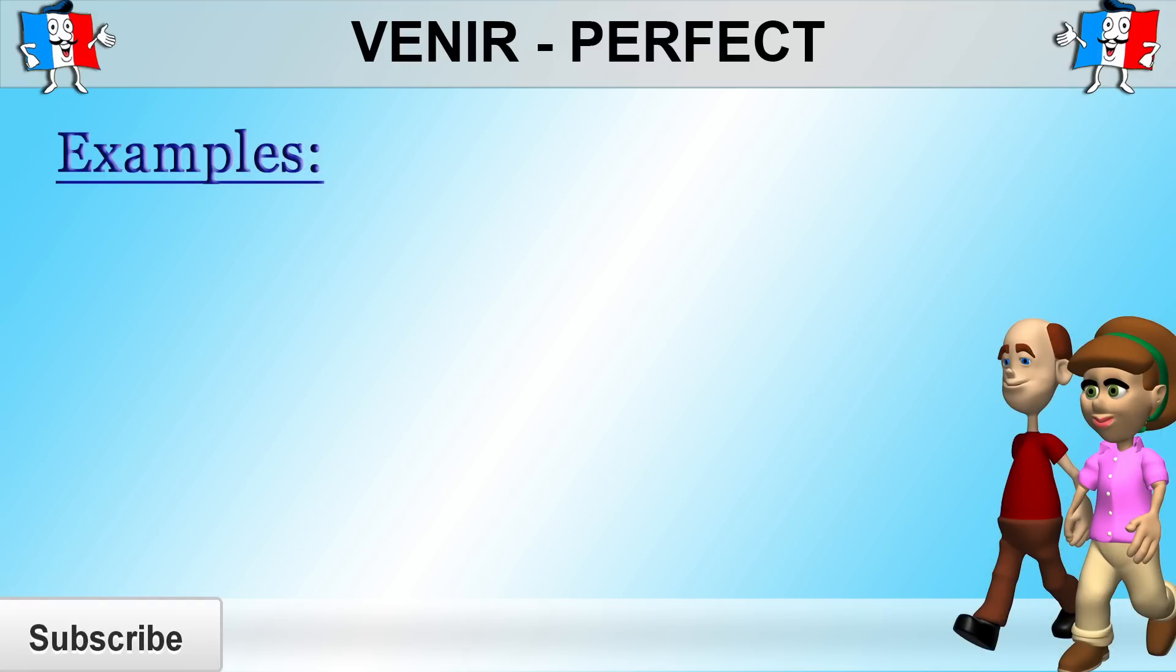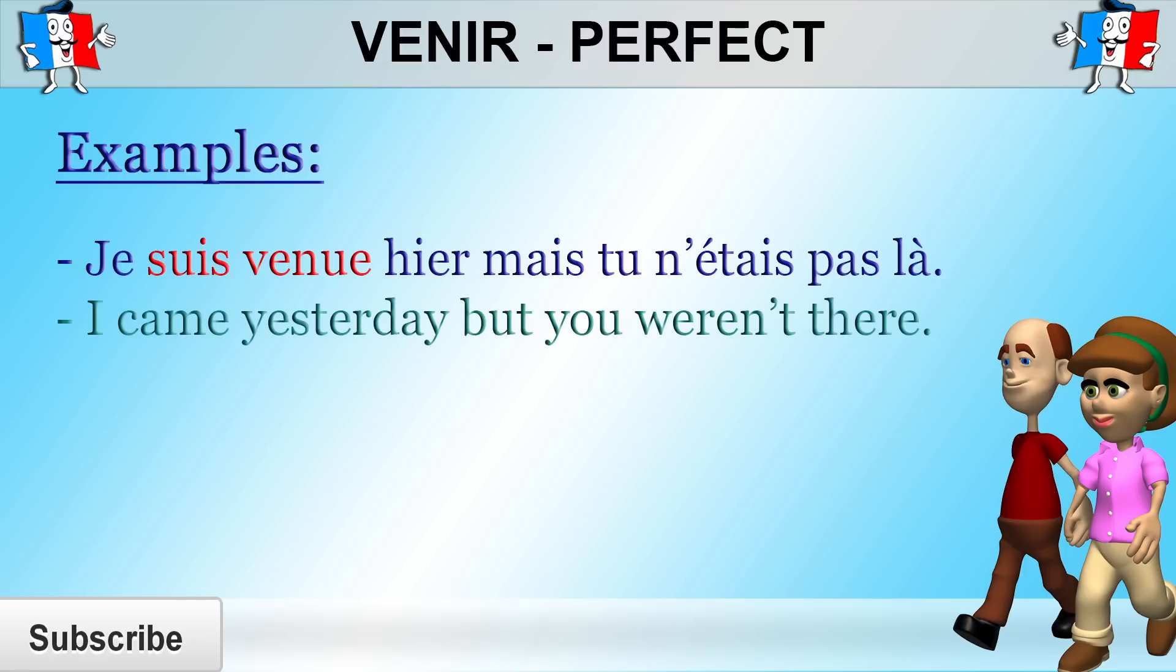So let's have a look at a few examples. Je suis venu hier, mais tu n'étais pas là. I came yesterday, but you weren't there. So the person speaking is obviously a girl and that is why we spelt venu with an e.